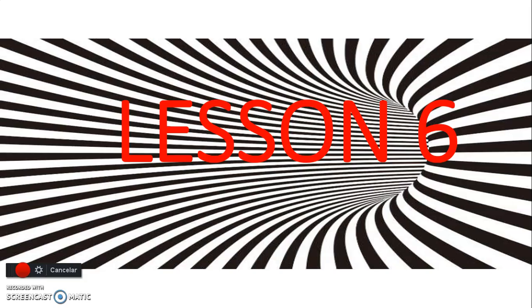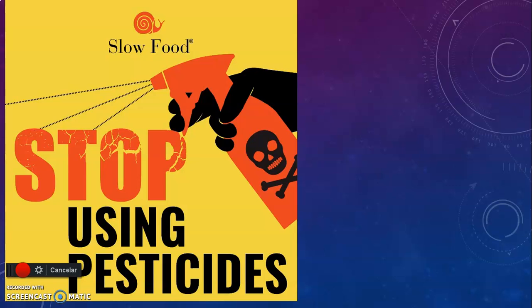Good morning, welcome to Lesson 6. Today we are going to see a new topic: pesticides and the influence that poison has on plants, vegetables, and different agriculture styles of life. This is Lesson 6. We use pesticides everywhere — in plants and vegetables — and we are actually using too many chemicals in our bodies as well, like alcohol and other substances to kill bacteria.